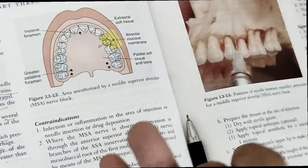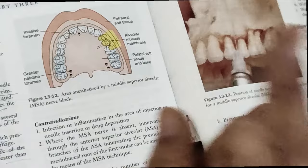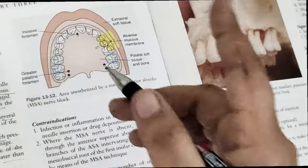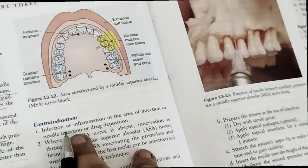The MSA will anesthetize the pulps of the maxillary first and second premolars as well as the mesiobuccal root of the first molar. So if you want to do root canal treatment of the first molar, you have to give both MSA and PSA. In the MSA, the hematoma chances are very less because we are not going into the pterygoid plexus.